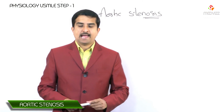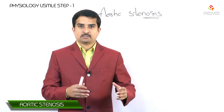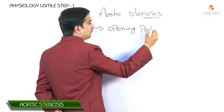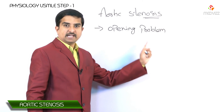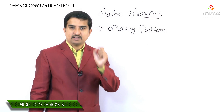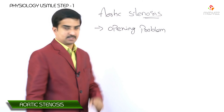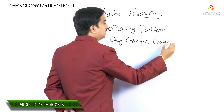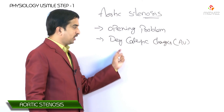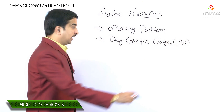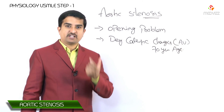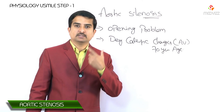Aortic stenosis, as we already discussed in contrast to aortic regurgitation which is a closing problem, is an opening problem of the aortic valve. It is often caused by degenerative calcific changes in the valve leaflets. This degenerative calcific change is more commonly seen in the elderly, approximately 70 years of age, and is the most common cause of aortic stenosis.